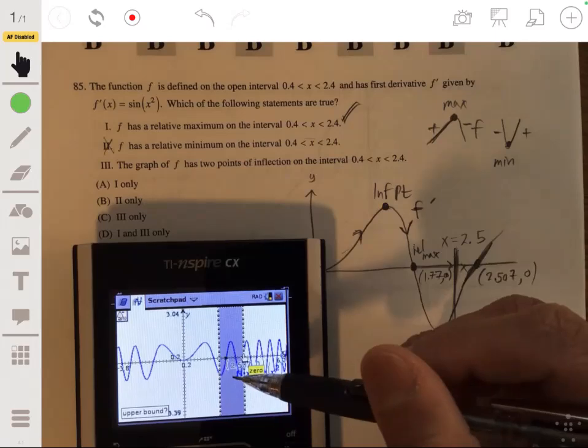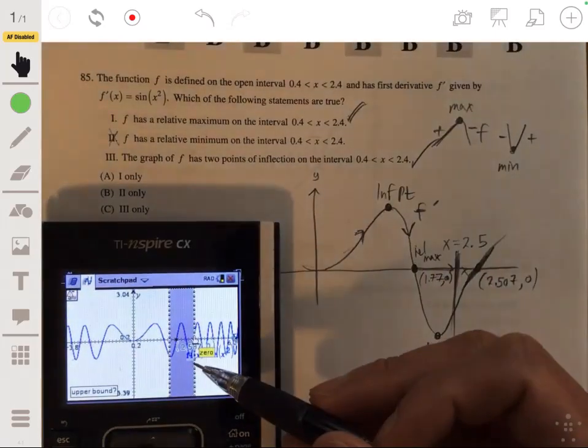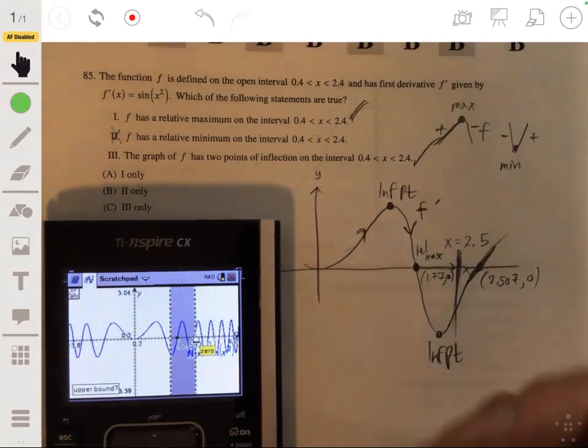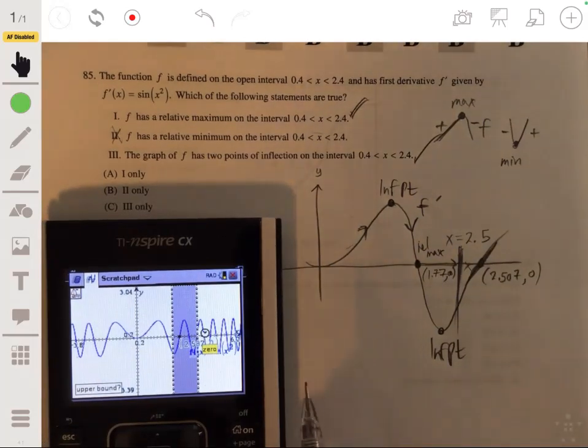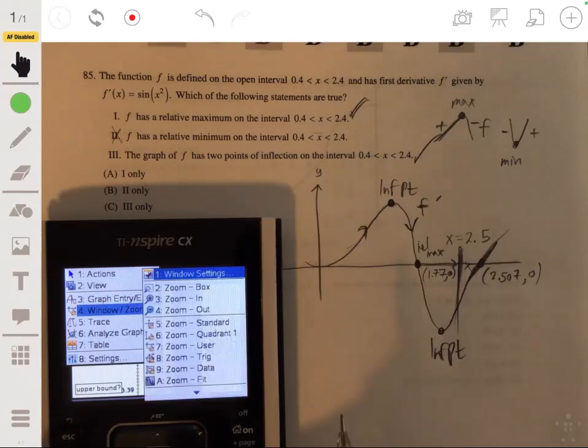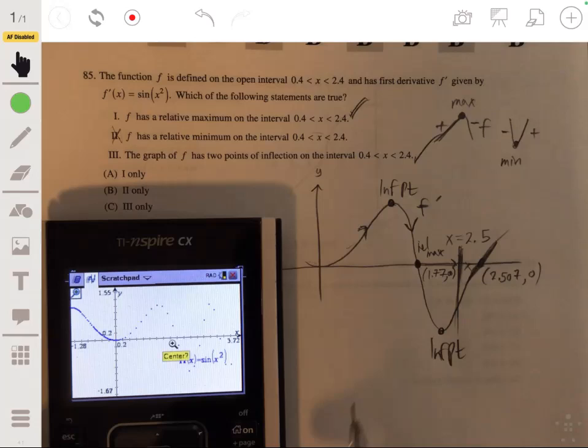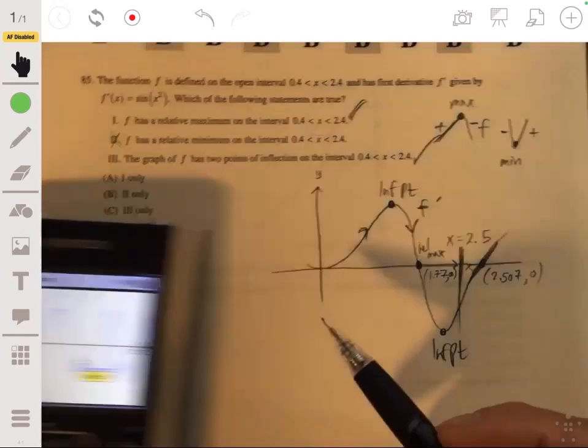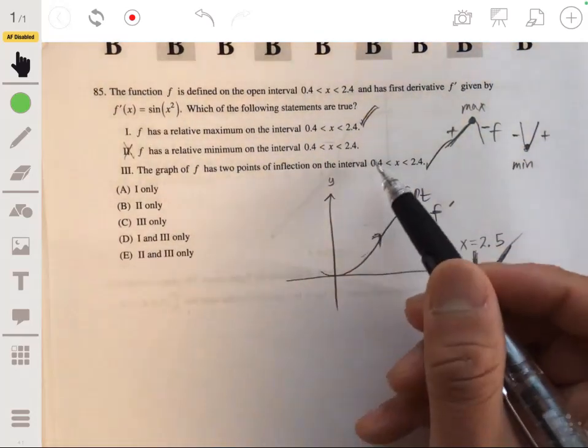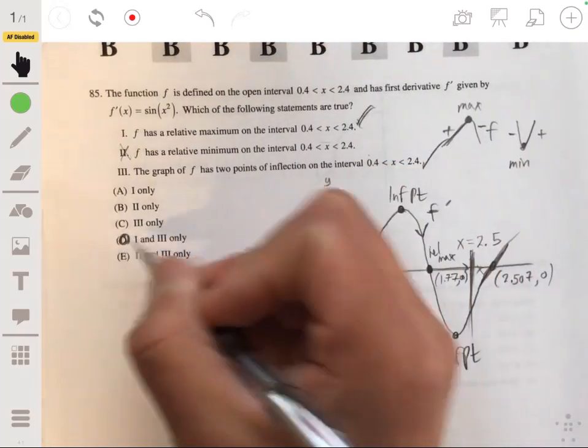And there are two of them. There are, there are two of them on this interval. So this would, because there's one right there, there's one at the bottom down there. Let me zoom in again. So you can see one over here down here. So then, so then one or three, one and three are valid. So the answer would be D.